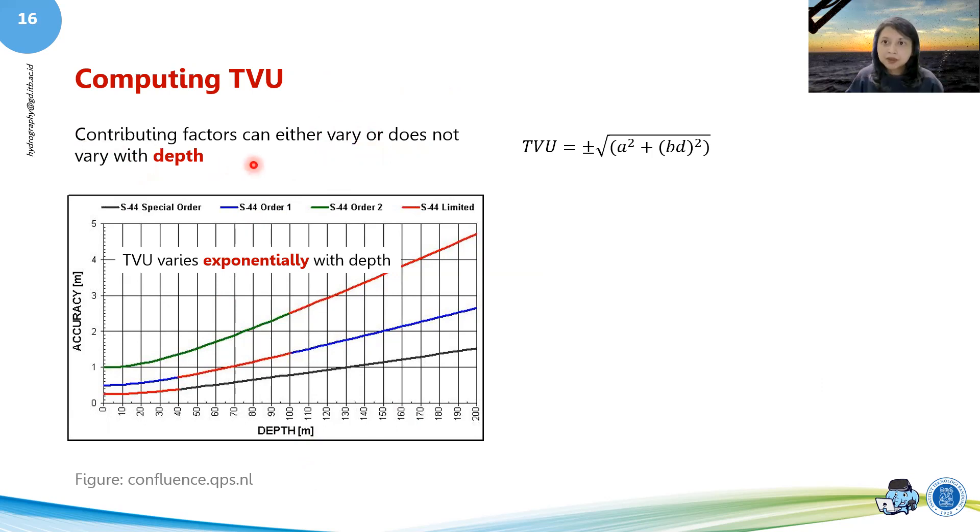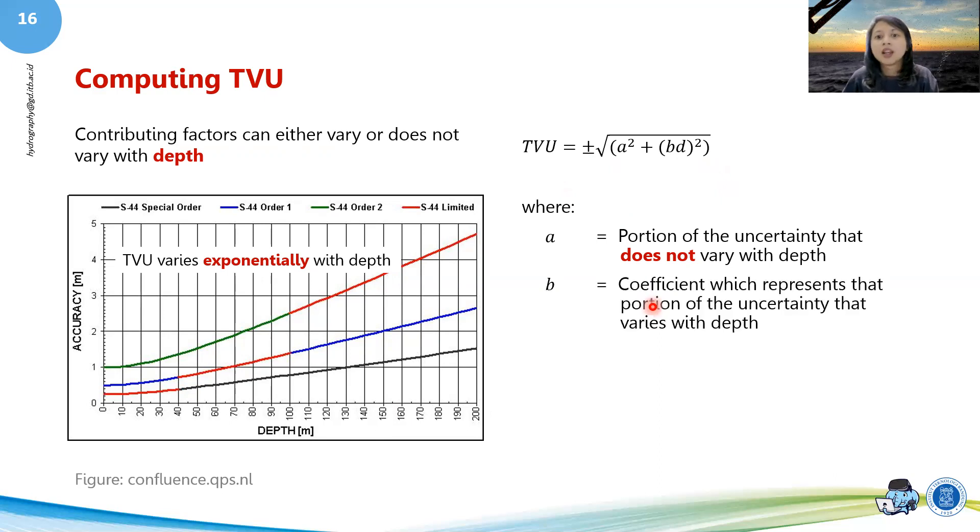You can simplify it using this equation. So you don't have to identify them one by one, you actually already have your equation, in which A is basically the portion of the uncertainty that does not vary with depth, and B is the coefficient that represents something of the uncertainty that varies with depth. So D here is depth. So BD is actually the whole portion of uncertainty that varies with depth.